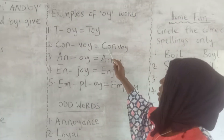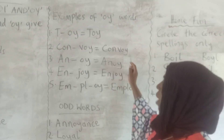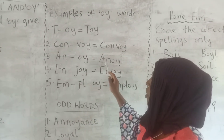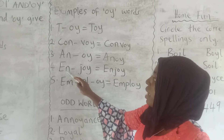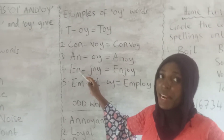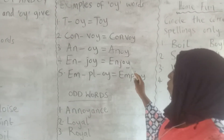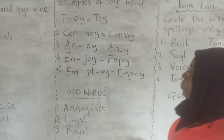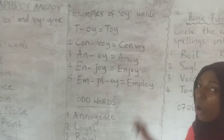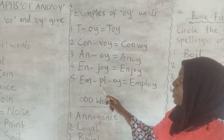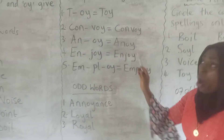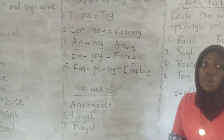C-O-N-V-O-Y: convoy. E-N-J-O-Y: enjoy. E-M-P-L-O-Y: employ. You can see the O-I sound in all of these words comes at the end.